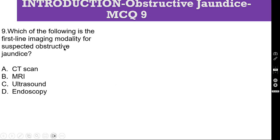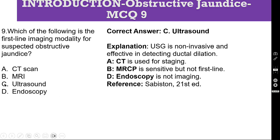MCQ number 9: Which is the first-line imaging modality for suspected obstructive jaundice? Options: A. CT scan, B. MRI, C. Ultrasound, D. Endoscopy. The correct answer is C — ultrasound. This is the first-line investigation. Although ERCP is the investigation of choice for obstructive jaundice, it is not listed here. Ultrasound is non-invasive and effective in detecting ductal dilatation, and it is cheap. It cannot always pick up stones or growth in the CBD, but it can detect ductal dilatation, making it the appropriate initial investigation.